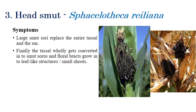Coming to the third disease — head smut. The name itself indicates smutting of the head; the entire head is converted into black powdery masses. Sphacelotheca reiliana is the causal organism of head smut. The symptoms are similar across crops: wherever you hear the word 'smut,' the entire inflorescence, head, or grains are converted into smut-colored powdery masses.